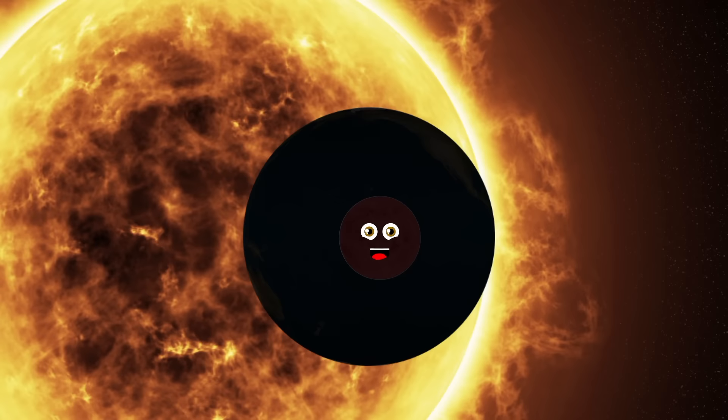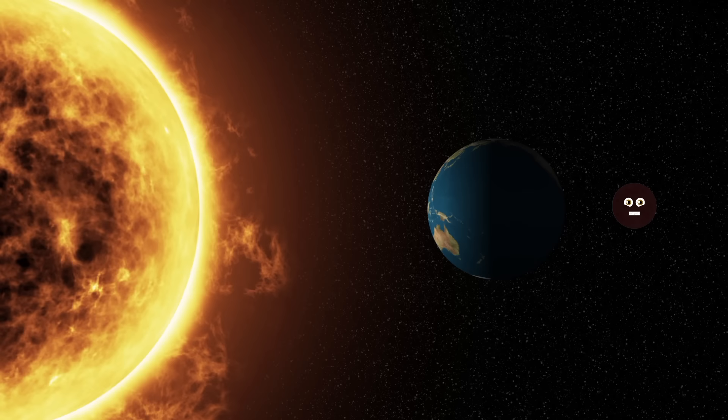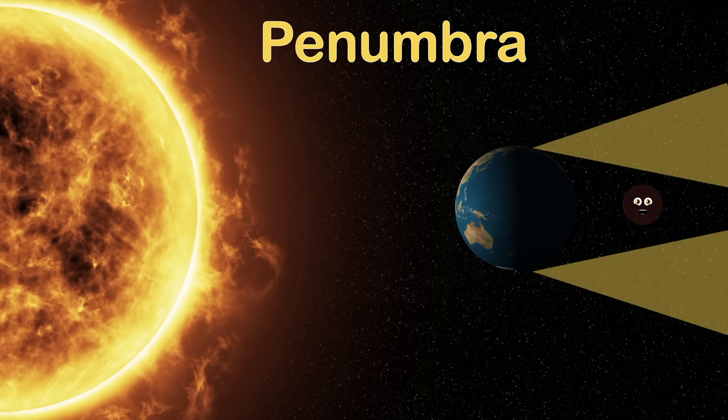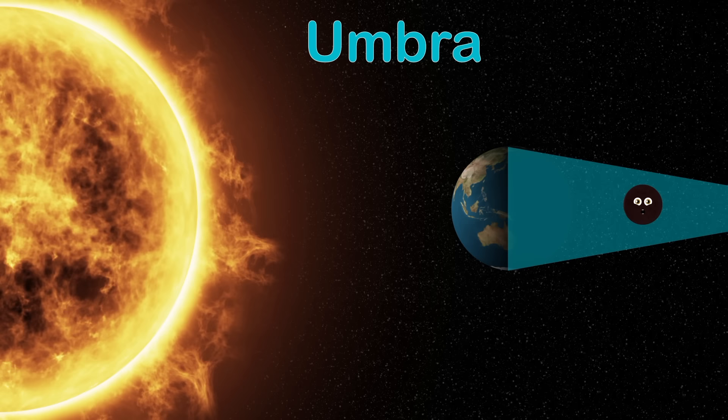We'll learn about the shadows' names and the stages of the eclipse. The penumbra is a partially shaded outer region of the shadow cast by an opaque object like the earth, not letting the light pass. The umbra is the fully shaded area caused by the opaque object Earth, not letting any light pass.